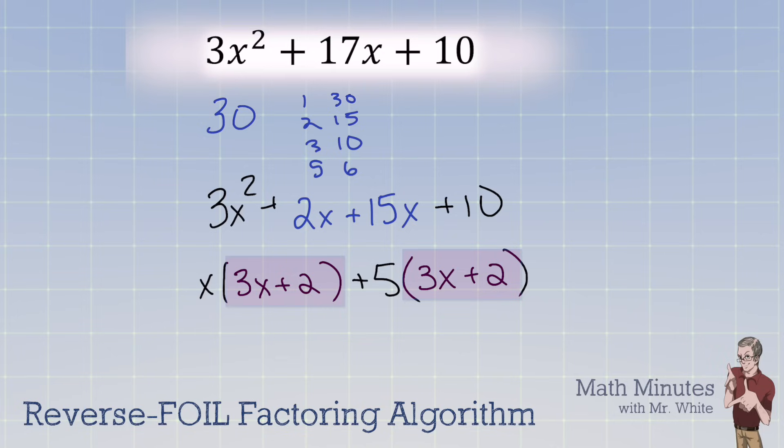So you can factor that out and write it one time right here. And then in a second set of parentheses, you write what's left behind. It was the x and the positive 5. We have just reverse foiled the trinomial that was given, 3x² plus 17x plus 10. And we used an algorithm. There was no guessing and checking.